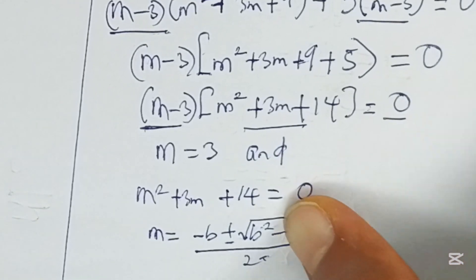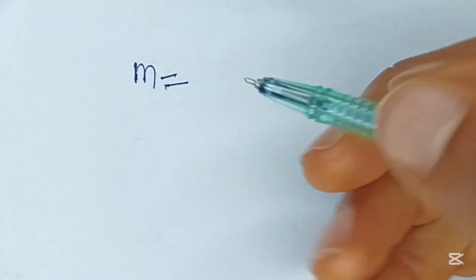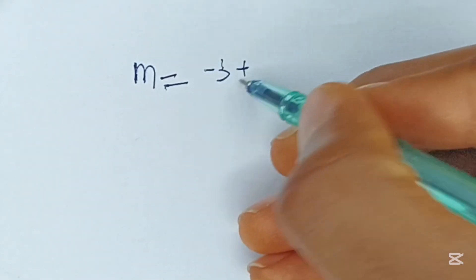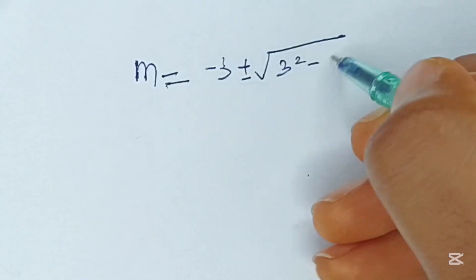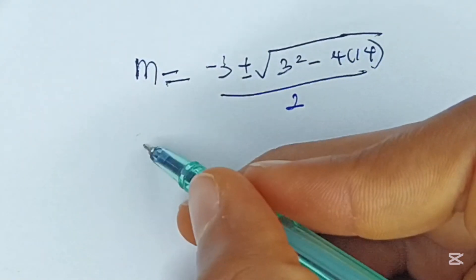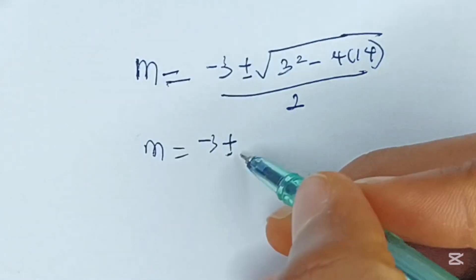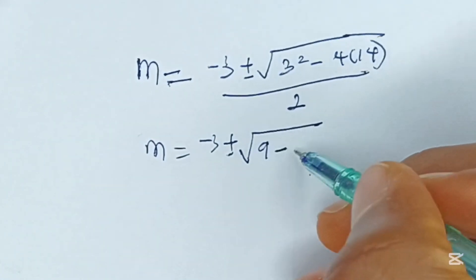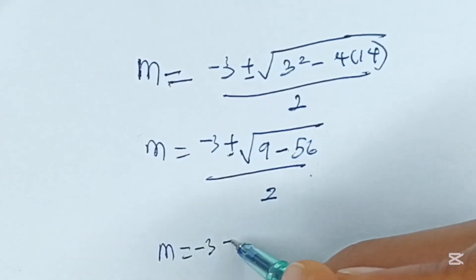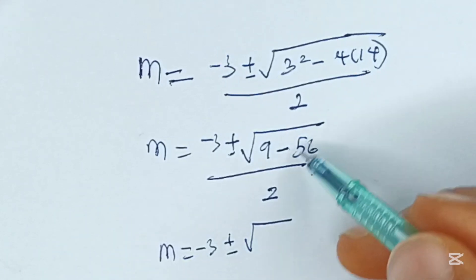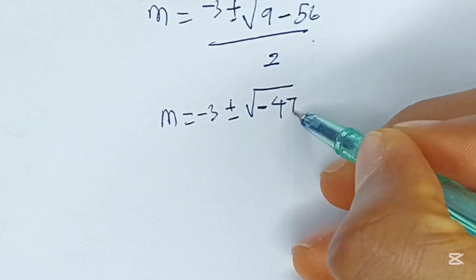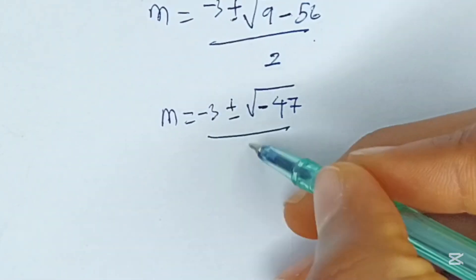To solve this, m will be given by minus 3 plus or minus square root of 3 squared minus 4 times 14, all over 2a. So m equals minus 3 plus or minus square root of 9 minus 56, all over 2. That gives m equals minus 3 plus or minus square root of negative 47, all over 2.